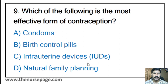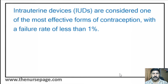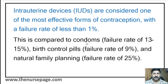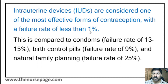Ninth question: Which of the following is the most effective form of contraception? Condoms, birth control pills, intrauterine devices, or natural family planning? The correct answer is intrauterine devices (IUDs). IUDs have a failure rate of less than 1%, compared to condoms at 13-15%, birth control pills at 9%, and natural family planning at 25%. That is why IUDs are considered the most effective form of contraception.